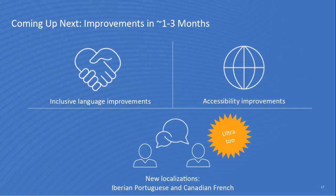Moving on to improvements in the one-to-three-month timeframe: a significant focus on inclusive language improvements in original — altering references such as 'master courses,' 'blacklist,' and 'whitelist.' For accessibility, improvements to the grade center include improving headers, table structures, clarifying button roles, improving ARIA labeling, and supporting date picker navigation. From a languages perspective, we've always supported Brazilian Portuguese; we're now also going to be supporting Iberian Portuguese as well as Canadian French in both course experiences.